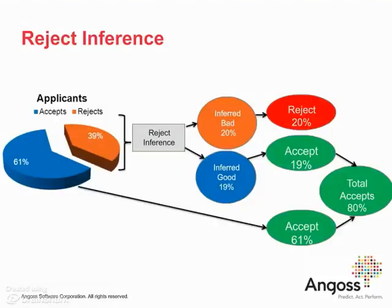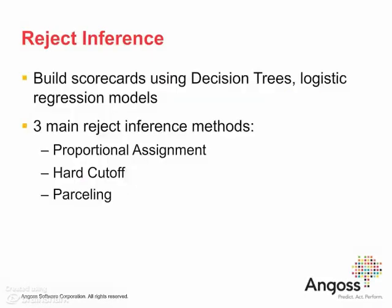Reject inference is used for application scorecards. It helps infer the behavior of rejected applicants in order to identify new customers at a lower potential risk. With Knowledge Studio version 8.5, you have the ability to use decision trees and logistic regression models to determine the likelihood of predicting the exhibited behavior.